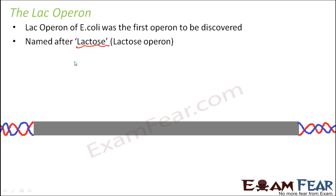This operon talks about the fermentation of lactose. Normally, E. coli's preferred source of energy is glucose, which undergoes oxidation to produce energy. In the absence of glucose, when E. coli is kept in a medium with lactose, the lactose enters the cell and needs to be fermented. Fermentation means breaking down lactose, which is a disaccharide, into its monosaccharides.